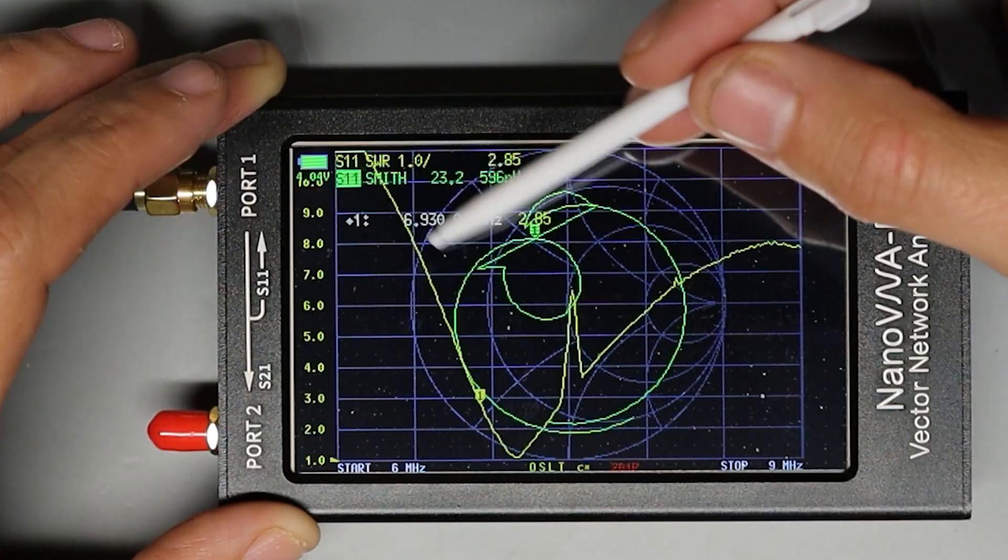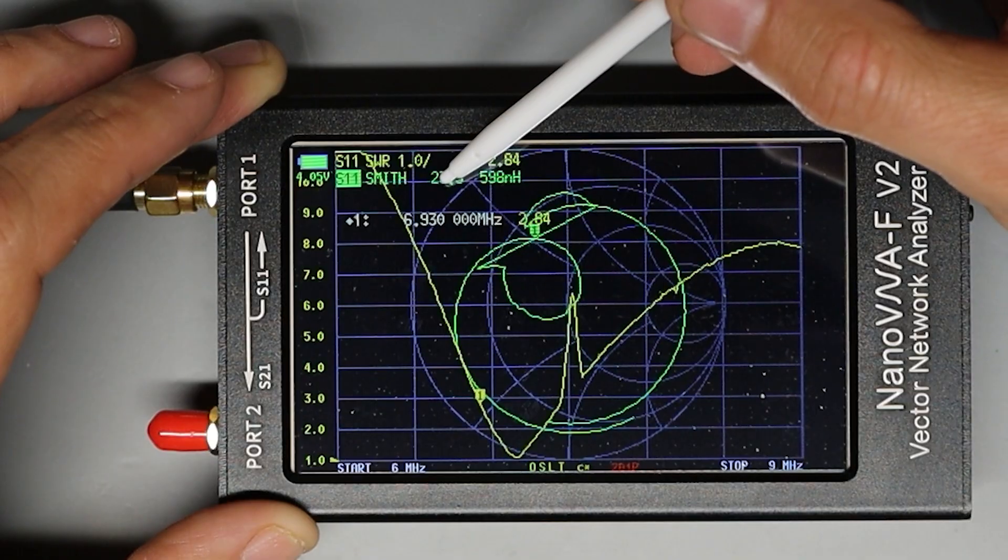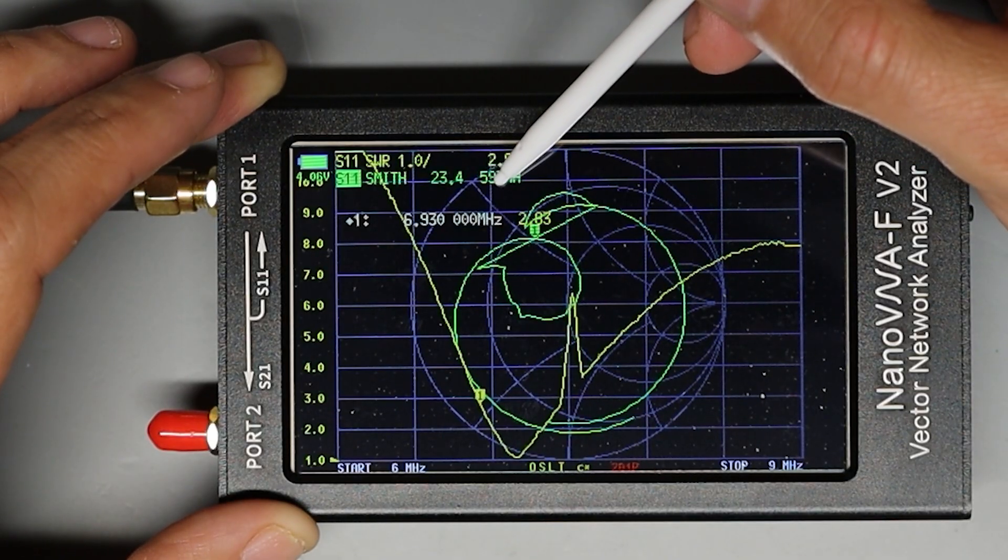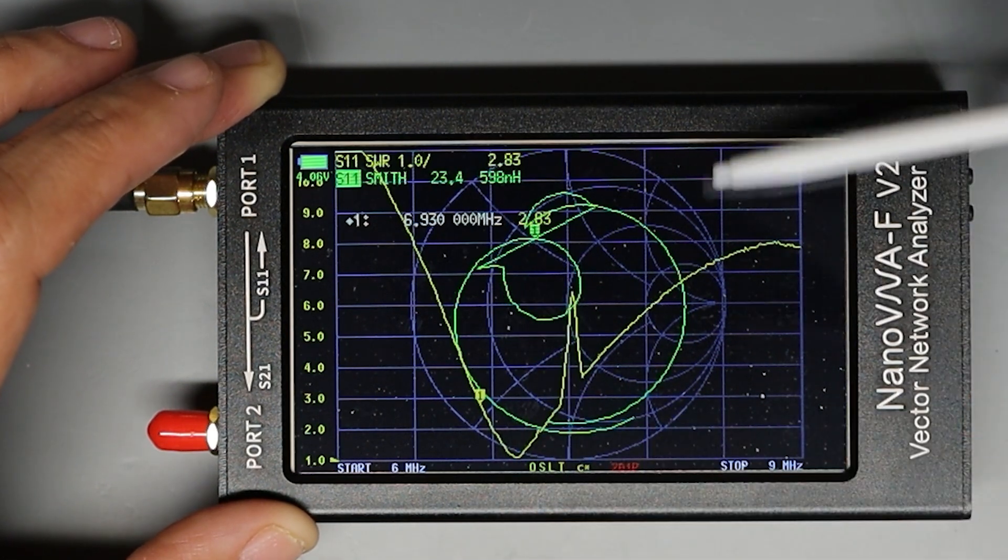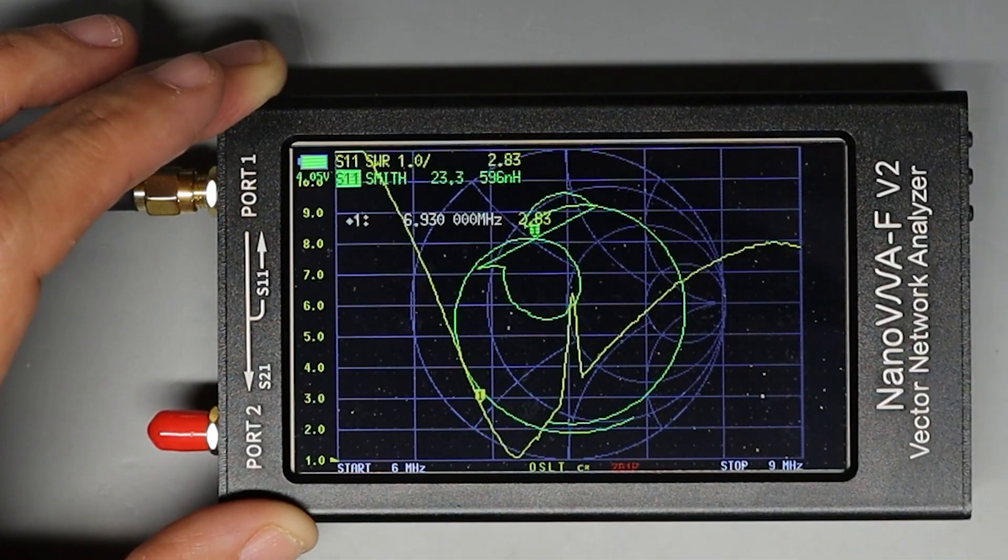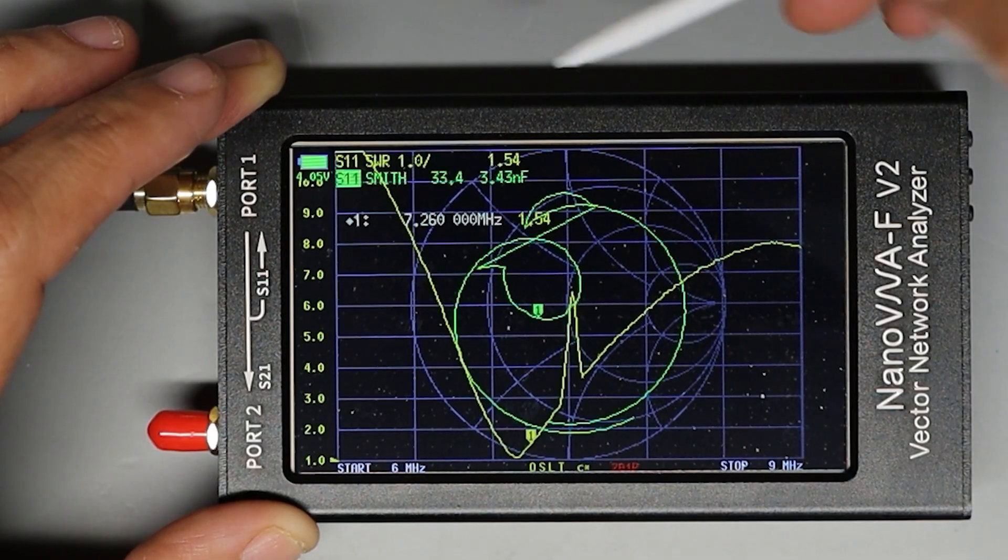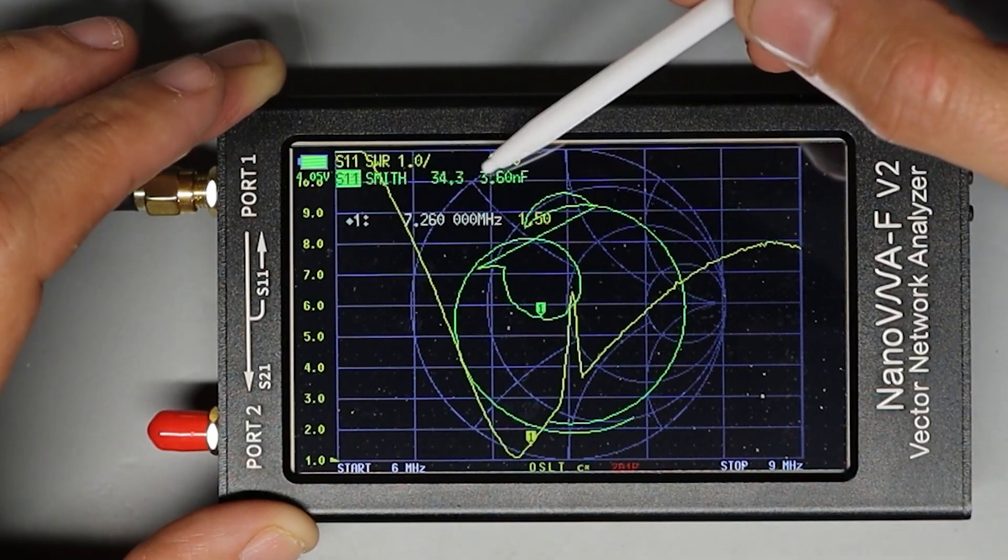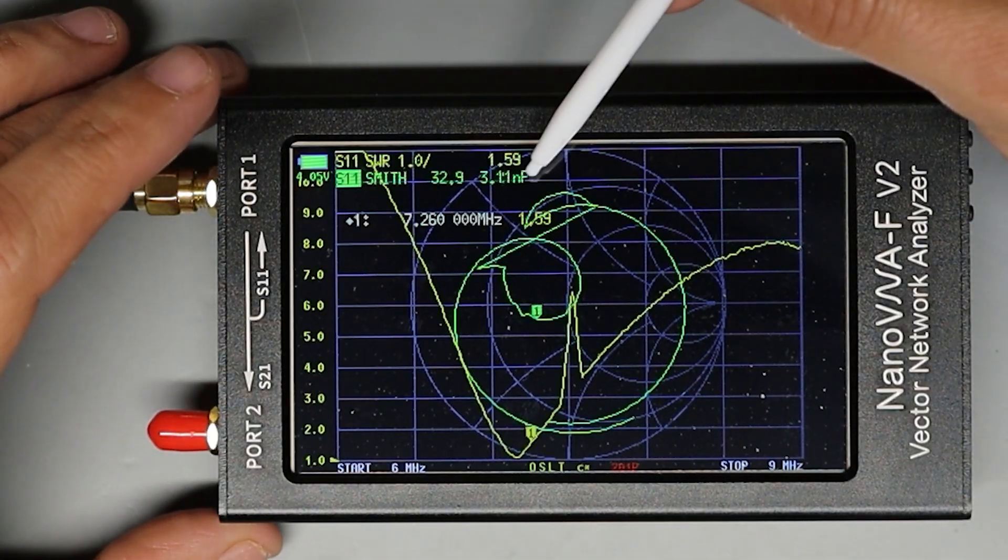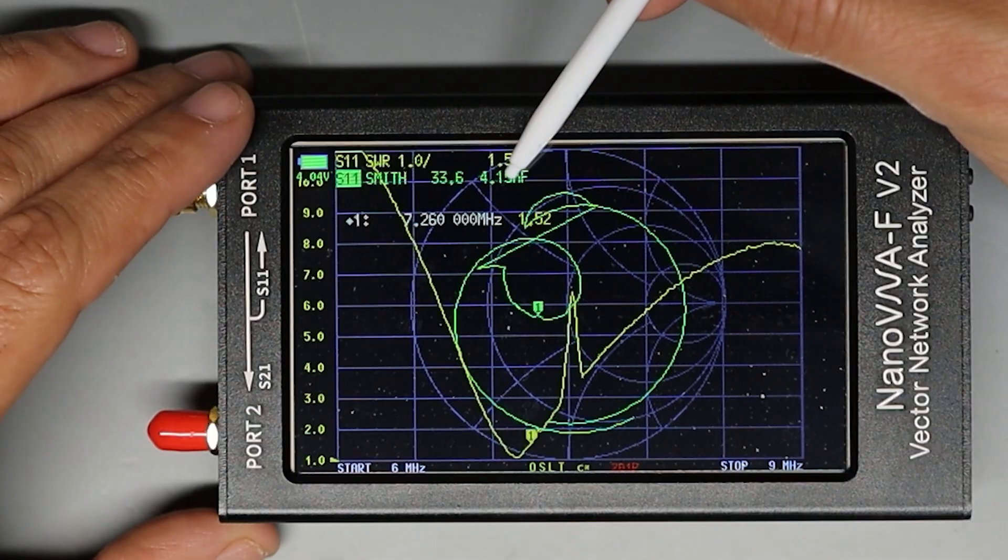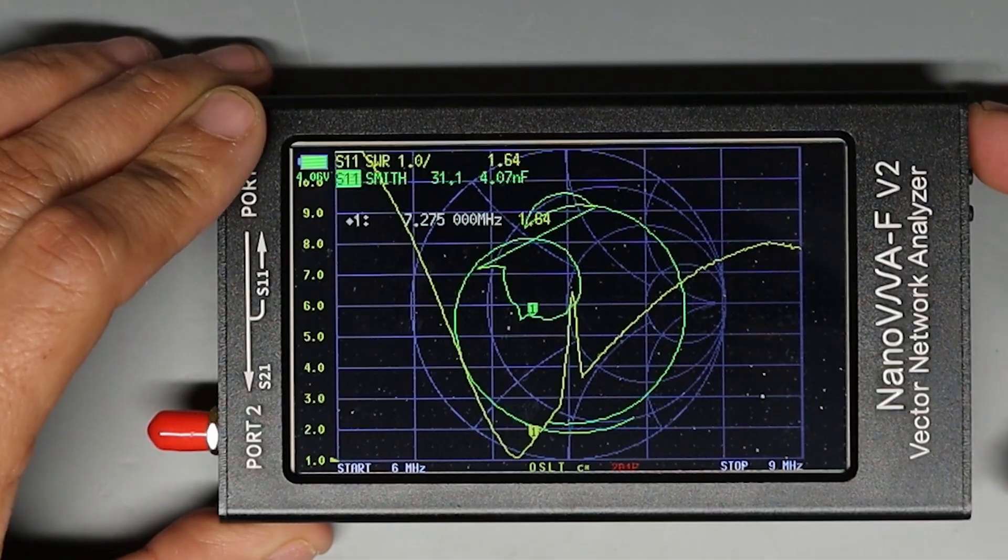So with the marker moved up to 6.93 megahertz you can see the SWR is 2.8 or so and now the impedance is 23.3 ohms with 597 nanohenries of inductance. Anytime the marker is above the horizontal point on the Smith chart we're going to see inductance and then if we move this back so that the green marker is below the horizontal line we're now going to see capacitance in our impedance result. I'm not an expert with reading Smith charts or with antenna theory but having the capacitive or inductive reactance included in our impedance measurement can help us make decisions about how to better tune the antenna.